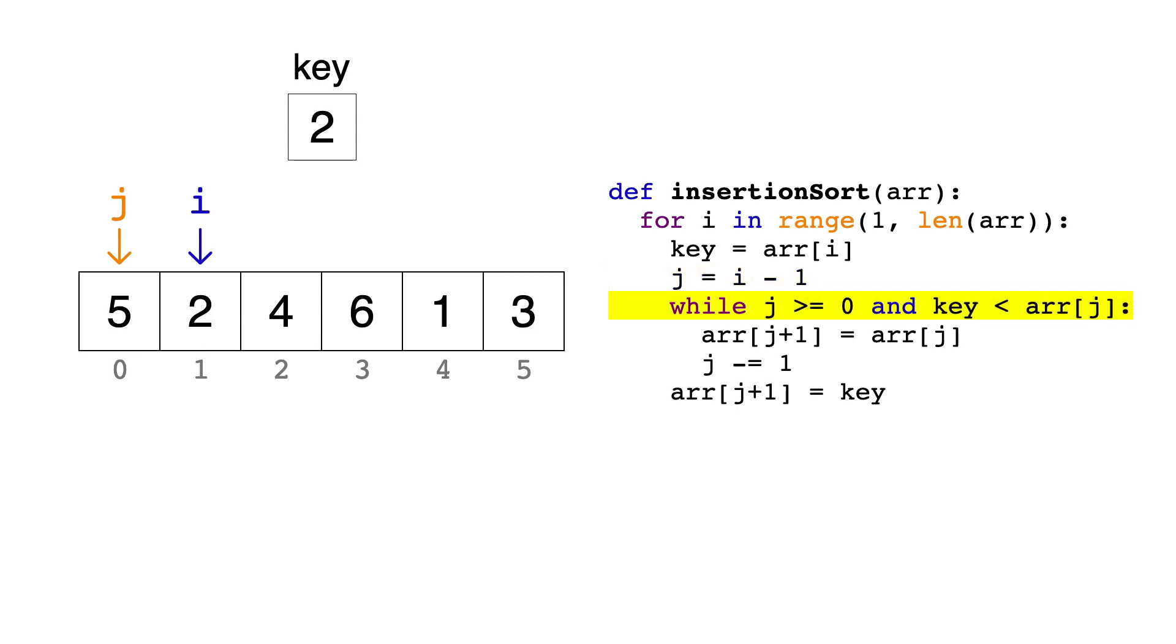We then enter a while loop that tests two things before entering. First, if j is greater than or equal to 0, which will prevent us from going out of bounds when moving backwards in the array. Second, if the key is less than the jth item in the array. If this is true, like in this case 2 is less than 5, that means that the key is not in the correct place, so we enter the loop.